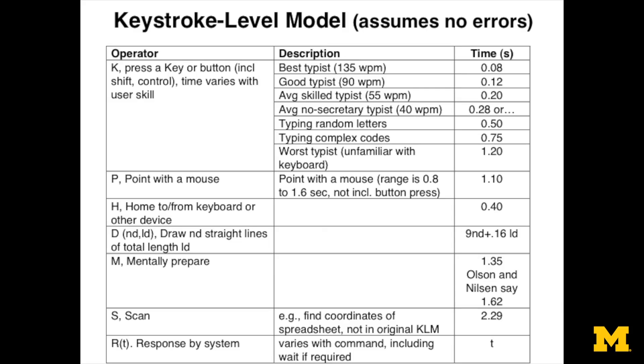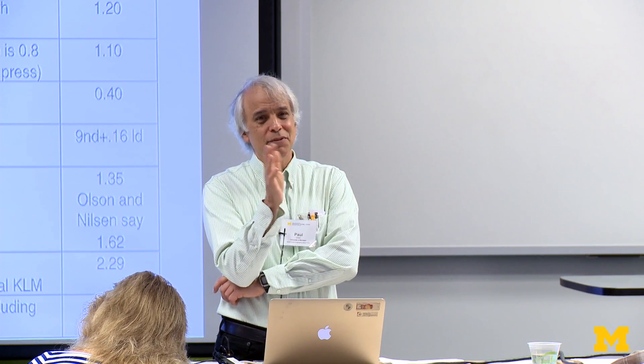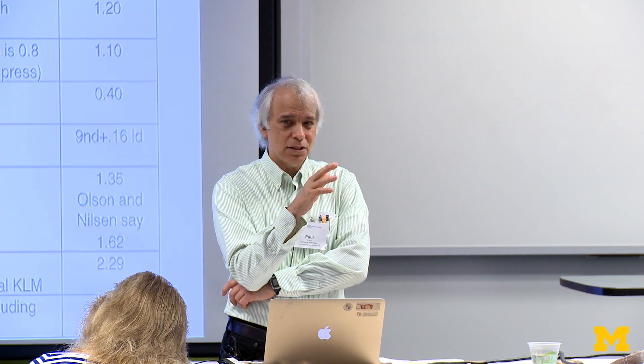The Keystroke Level Model assumes that the task is a routine cognitive activity — meaning the person basically knows what to do. If the person has to look at the screen and think for a long time to figure out what's going on, it's not a situation where this tool works well. If we're looking at someone figuring out a task for the first time, it just doesn't work, because we can't precisely say exactly what the person is doing.